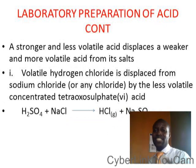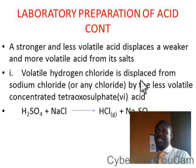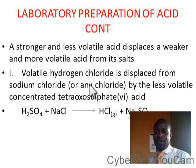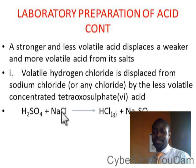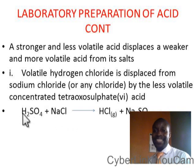A strong and less volatile acid displaces a weaker and more volatile acid from its salt. For example, volatile hydrochloric acid can easily escape into the air. Sodium chloride is a salt of a volatile acid. If hydrogen were here, this would be hydrochloric acid, which is volatile, and this is a less strong acid.